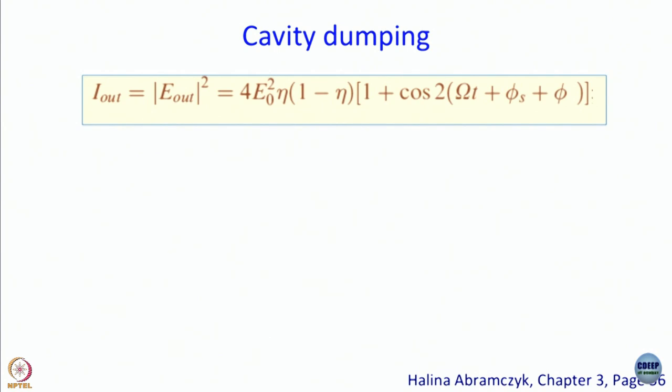Now the question is: what does this modulation mean? When is this going to be maximum, and when is this going to be minimum? The cosine function has a maximum value of +1 and a minimum of −1. So when will the intensity be maximum? When cos(2Ω·t + φ_s + φ) equals 1.